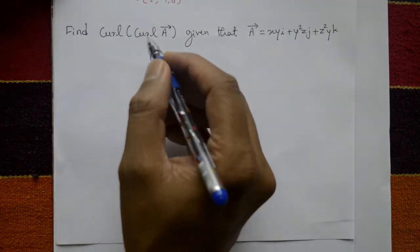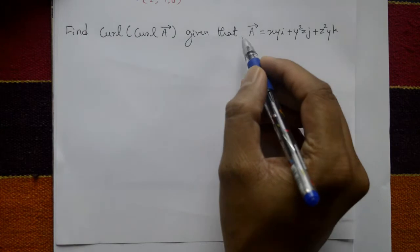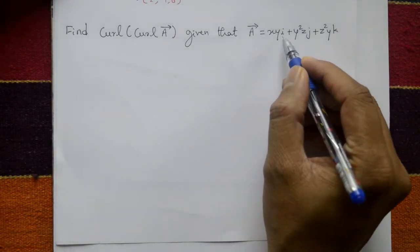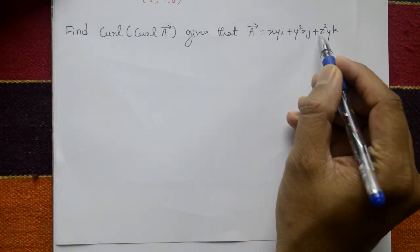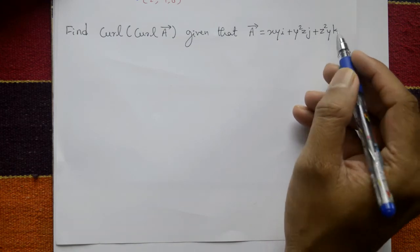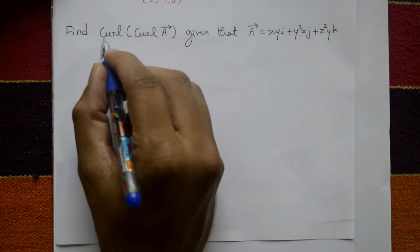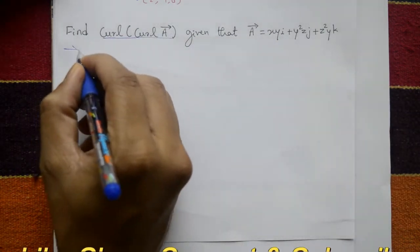Find curl of curl vector A given that vector A is equal to xy i plus y squared z j plus z squared y k. Now curl of curl of A. Solution: